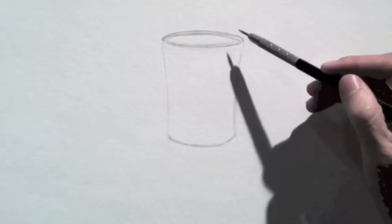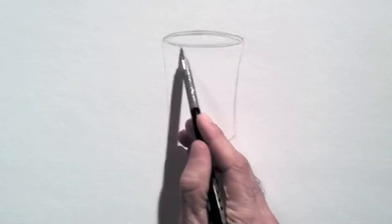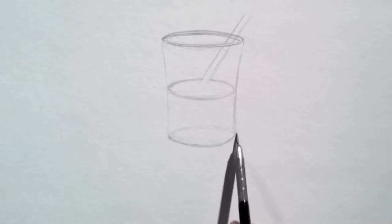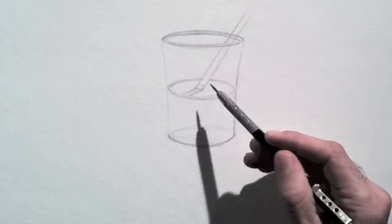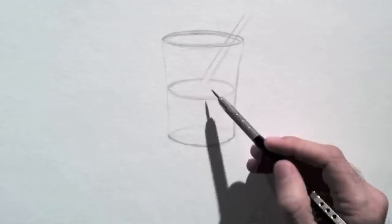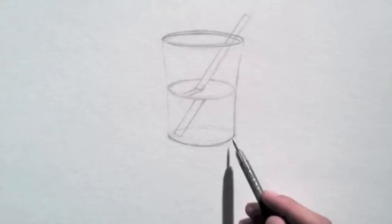I want a straw. Then another oval for the water and for the base. Of course the straw will deflect under the water.